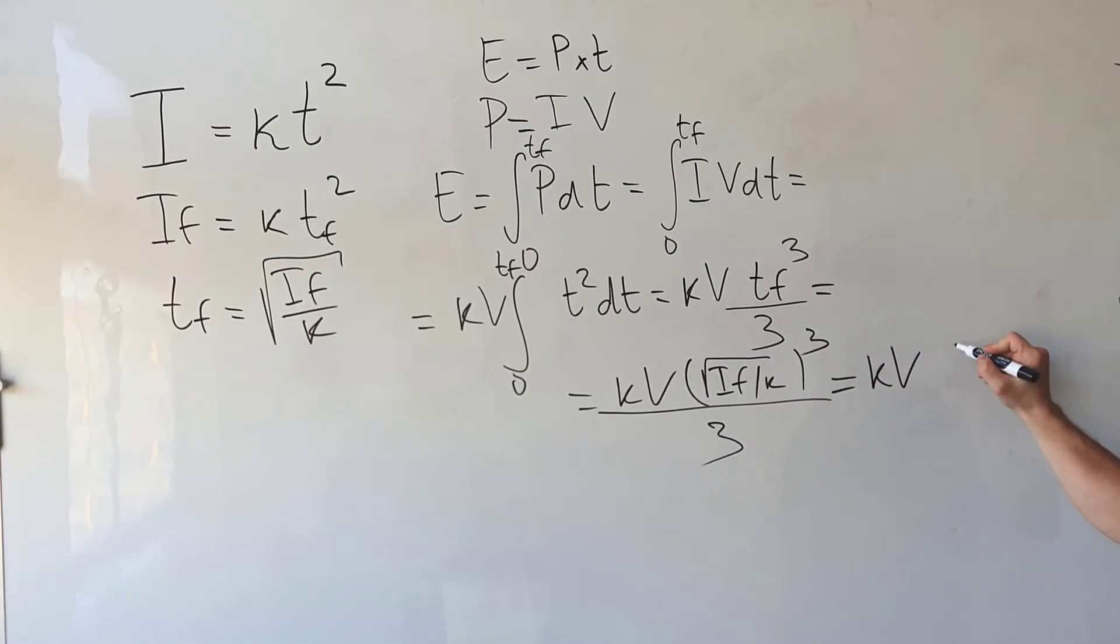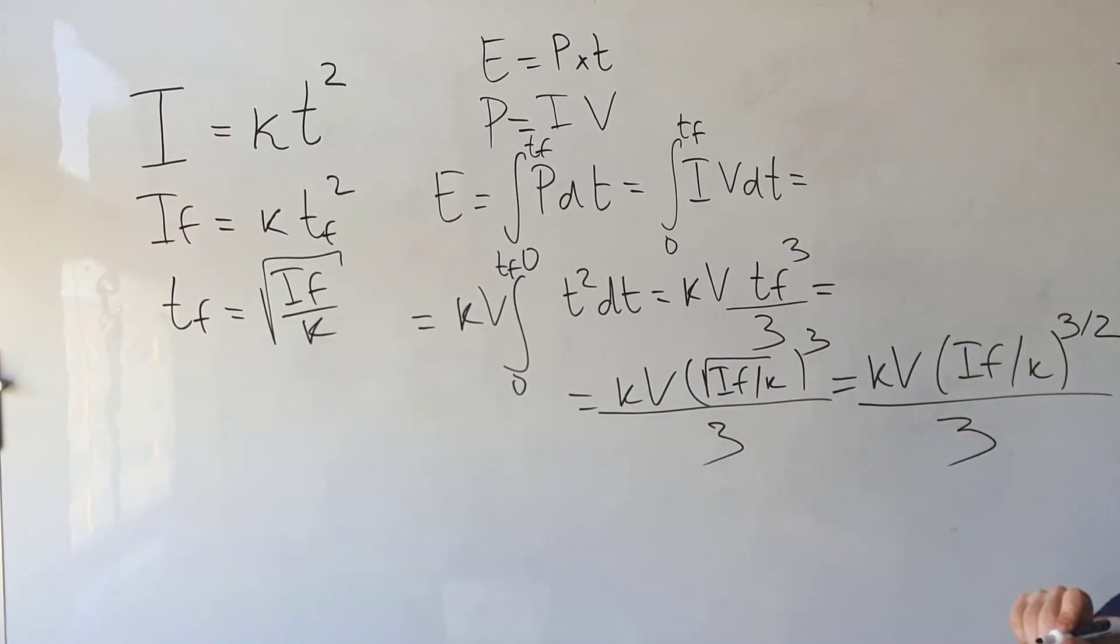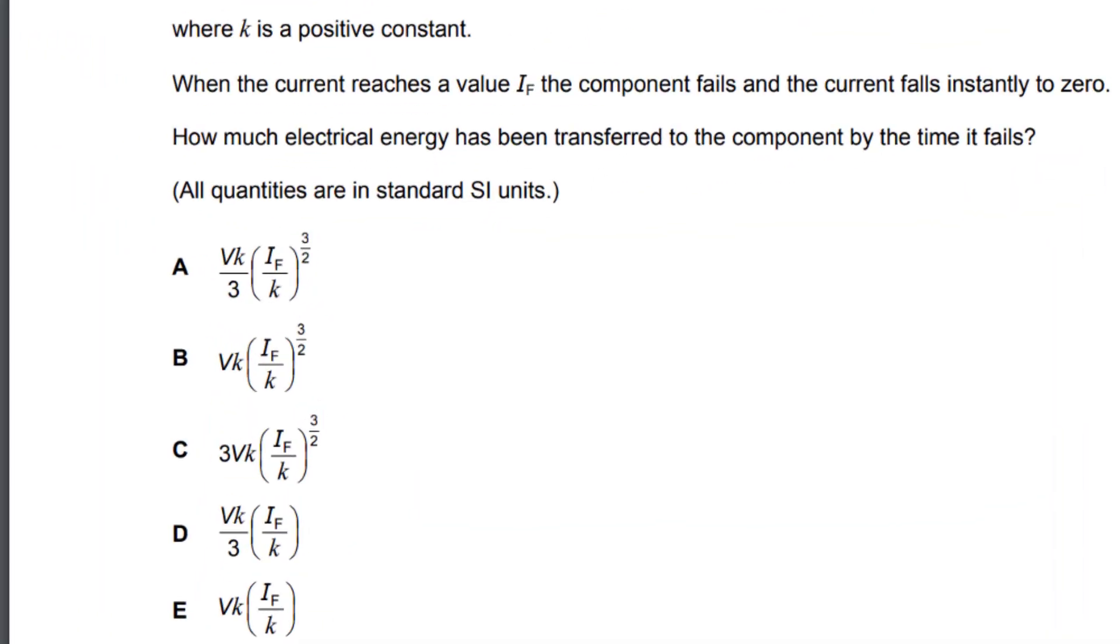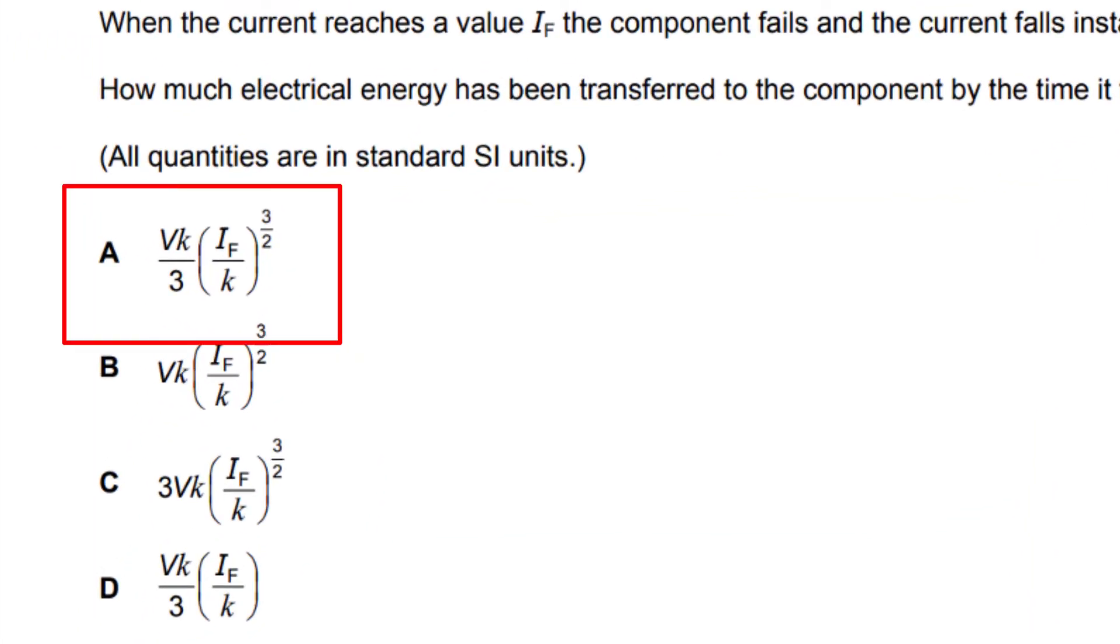Which is of course equal to kv, and then we're going to get if divided by k raised to the power of three over two divided by three. And the correct answer is a.